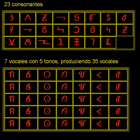Vah is a true alphabet, with 23 consonant letters, 7 vowel letters, and 5 tone diacritics, which are placed inside the vowels. It also has its own marks for commas and periods.